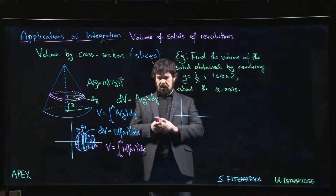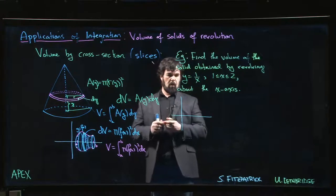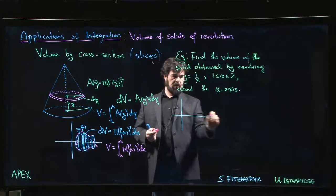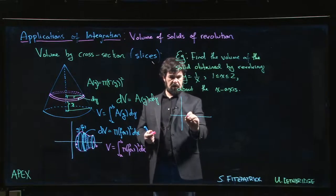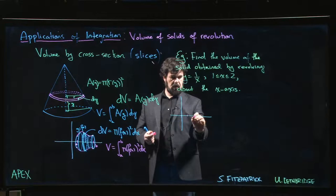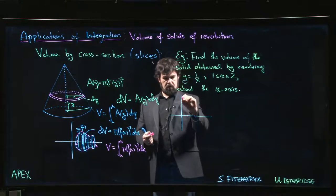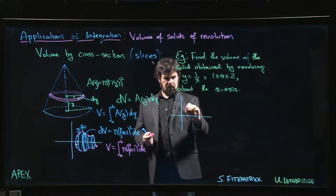So the object we're dealing with is the graph y equals 1 over x. We know that's a hyperbola. But we only want the piece for x between 1 and 2. So come down, come down. We started about there.